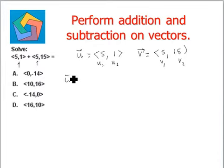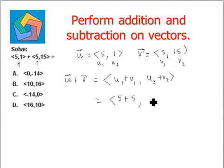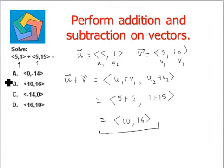Vector u plus vector v is given by u1 plus v1 and the other component is u2 plus v2. So, we have added the corresponding components. u1 is 5 plus v1 is also 5, u2 is 1, v2 is 15. 5 plus 5 is 10, while 1 plus 15 is 16. This is the final answer, which can be seen in option b.